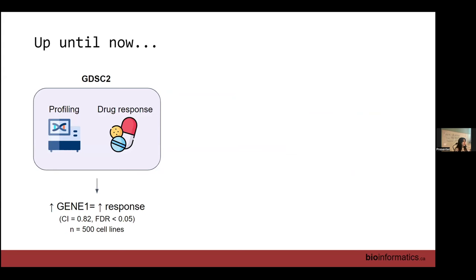Until now, we were just looking at one dataset at a time, or comparing two datasets at most. For example, we looked at one gene in GDSC and figured there is a correlation — either in terms of correlation or concordance index — meaning we found an association between a gene and a drug. Now we need to validate it.